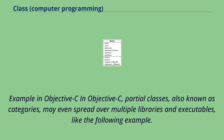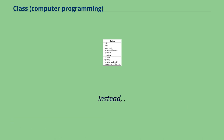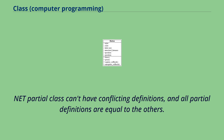In Objective-C, partial classes — also known as categories — may even spread over multiple libraries and executables. A key difference is that Objective-C's categories can overwrite definitions in another interface declaration, and categories aren't equal to the original class definition. In contrast, .NET partial classes can't have conflicting definitions, and all partial definitions are equal to the others.